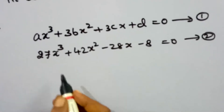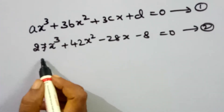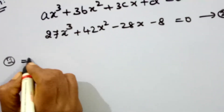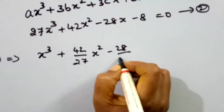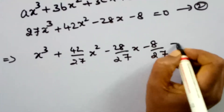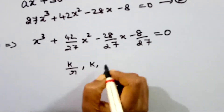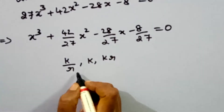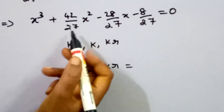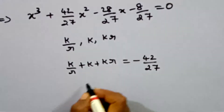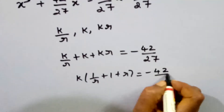Now for the second equation, 27x³ + 42x² - 28x - 8 = 0, the coefficient of x³ is 27, not 1. We convert it by dividing through by 27: x³ + (42/27)x² - (28/27)x - 8/27 = 0. The roots are in geometric progression as k/r, k, kr. We mark the first relation. Equation 8: k/r + k + kr = -42/27.